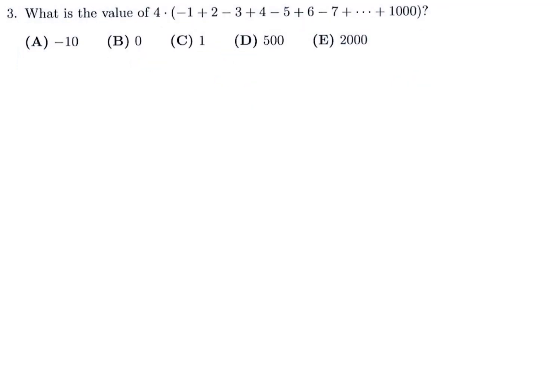What is the value of 4 times (negative 1 plus 2, negative 3 plus 4, negative 5 plus 6, negative 7, all the way up to positive 100)? Let's talk about what's in the brackets first.